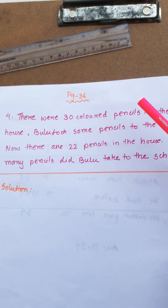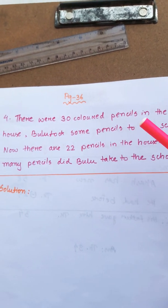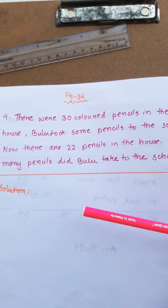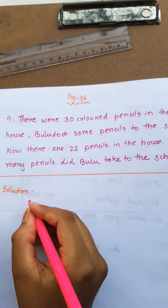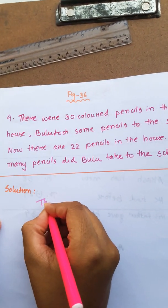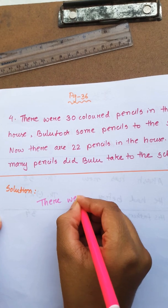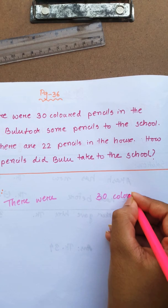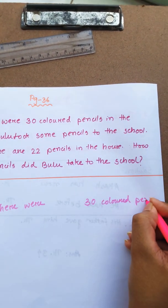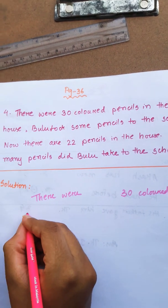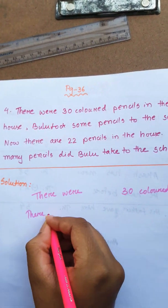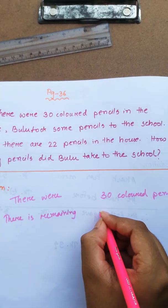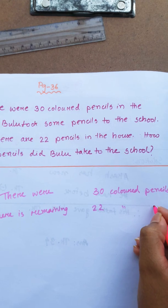There were 30 colored pencils in the house. Now there are 30 colored pencils in the house.